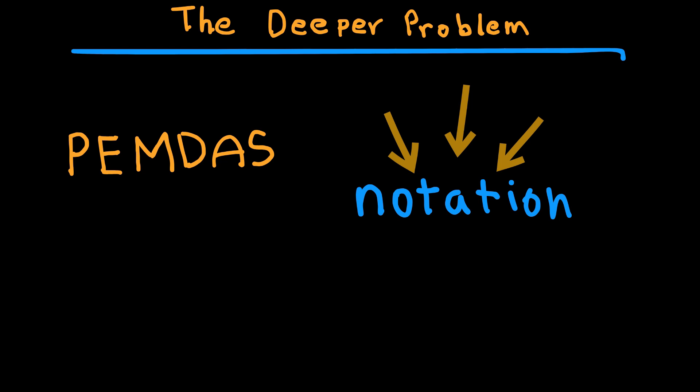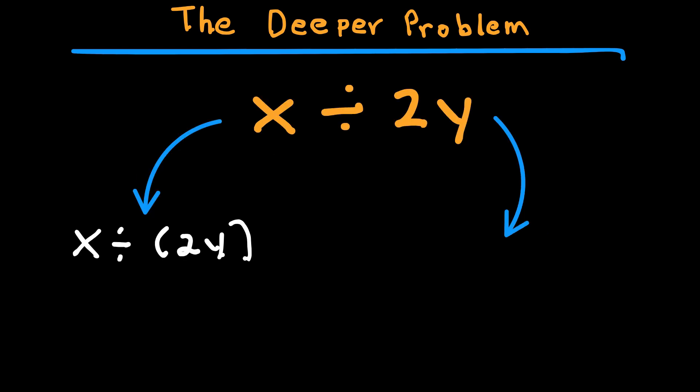Here's the thing: PEMDAS doesn't say to always do multiplication before division. It says multiplication and division are equal. You go left to right. But if you write it in a way that looks like grouping, like 2 parenthesis 3 parenthesis, people assume that's a package deal. This gets worse in algebra. What if I wrote x divided 2y? Is that x divided parenthesis 2y, or parenthesis x divided 2 parenthesis times y? Without context, it's confusing.